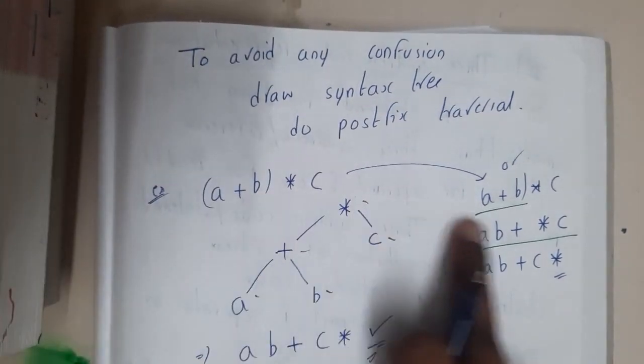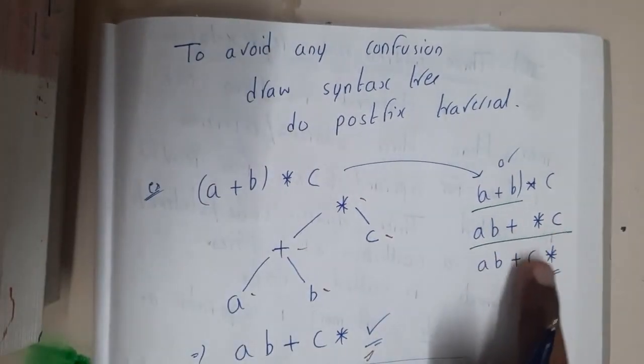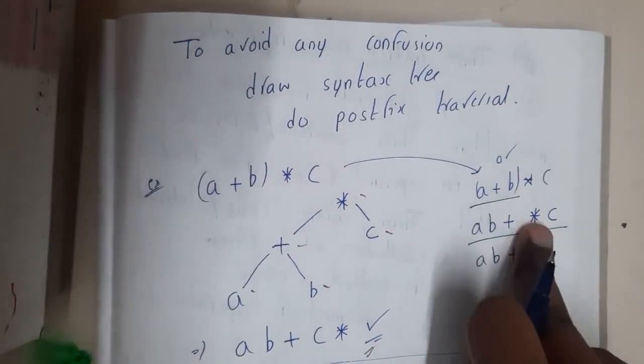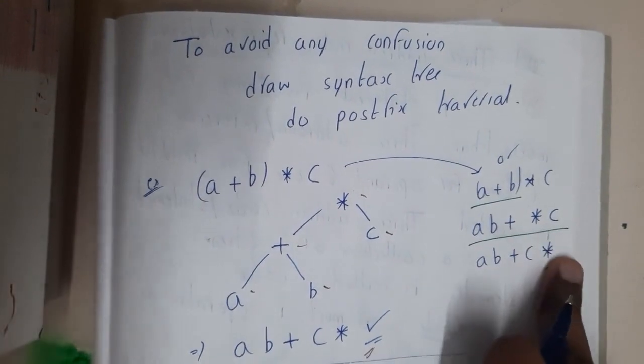Similarly, a plus b is first converted, that is nothing but a b plus into c. And again this is converted, so c will be pushed to this side, so a b plus c star. We got it, right?